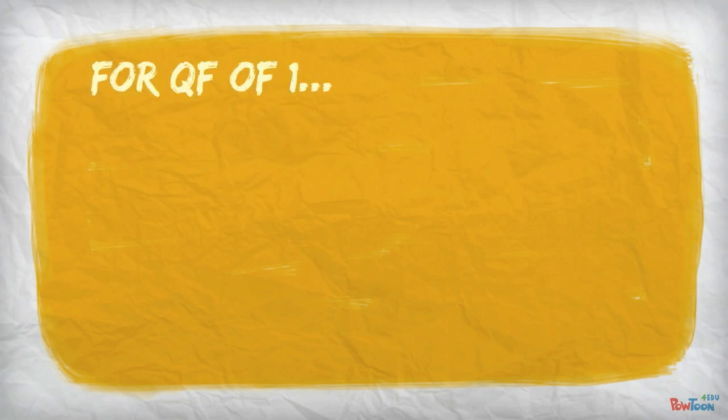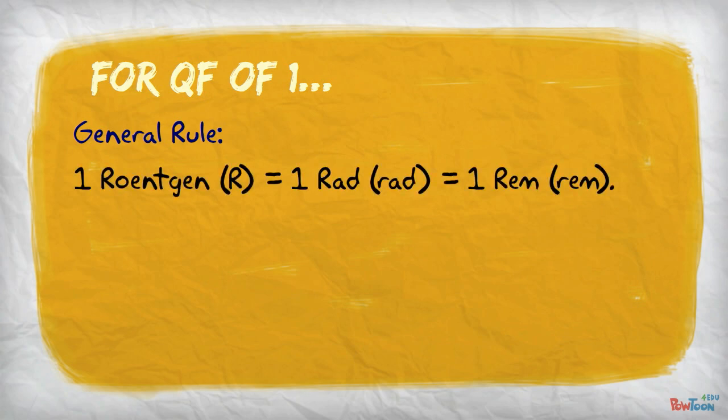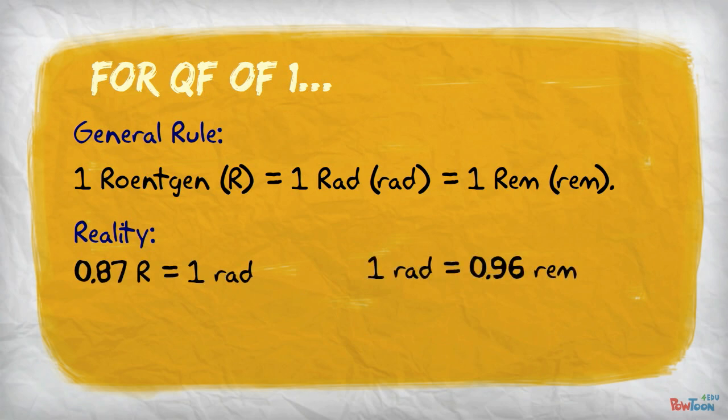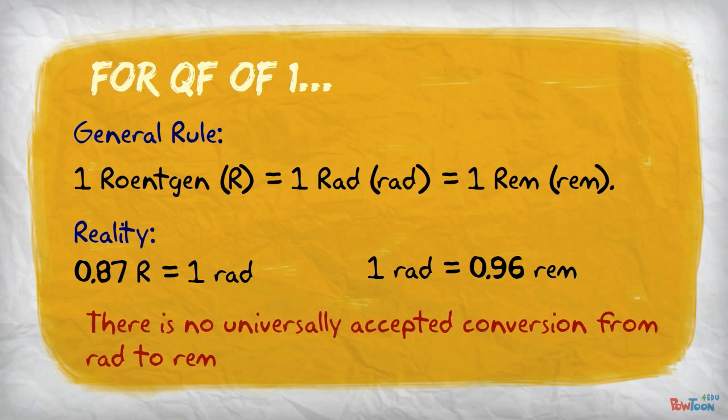When dealing with a QF of 1, you have probably heard the generalization that 1 Rhe equals 1 rad equals 1 rem. While this is an acceptable estimation, the reality is that it is 0.87 Rhe for 1 rad, and 1 rad is about 0.96 rem. It should also be noted that there is no universally accepted conversion from rad to rem.